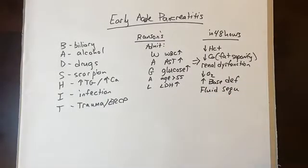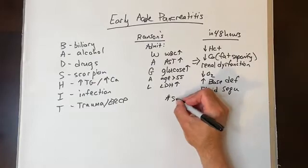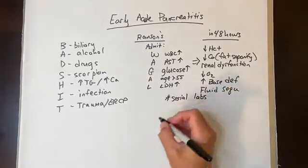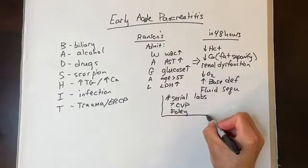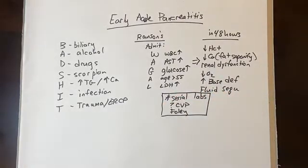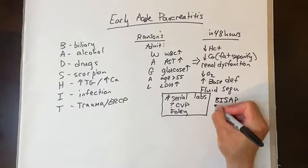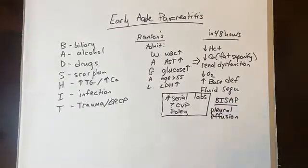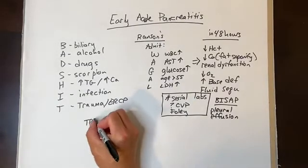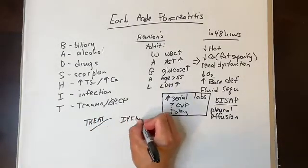Pancreatitis can lead to multi-system organ dysfunction including hepatic, renal, and pulmonary, so accurate fluid, respiratory, and laboratory monitoring is key — have a low threshold to place a Foley and a CVP line. Another initial scoring system is the BISAP score, which is similar but uses pleural effusions as a marker for increased mortality. Treatment of acute pancreatitis is supportive initially with bowel rest and IV fluids; do not give empiric antibiotics.